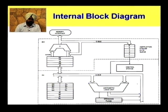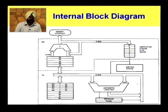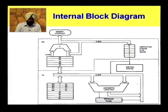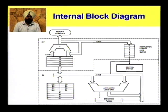The Execution Unit has general purpose registers, pointer registers, and index registers. The general purpose registers are AL, AH, BL, BH, CL, CH, DL, and DH. Combined, they form AX, BX, CX, and DX. Then we have pointer registers SP and BP, and index registers SI and DI.